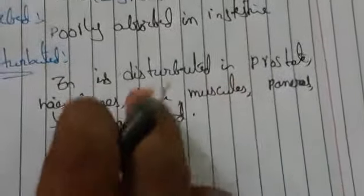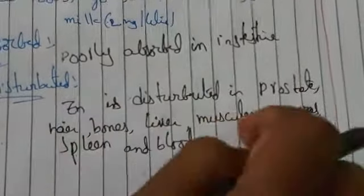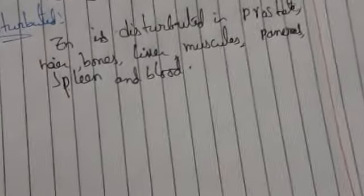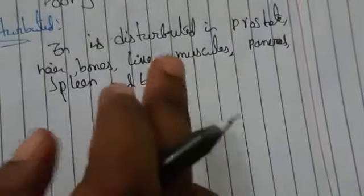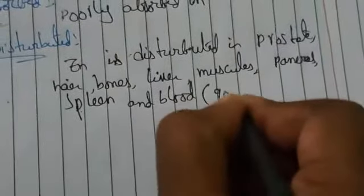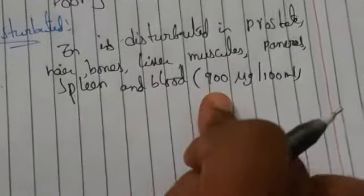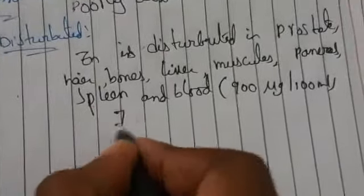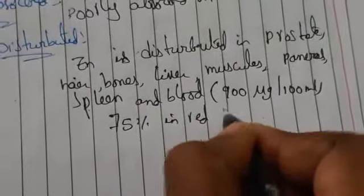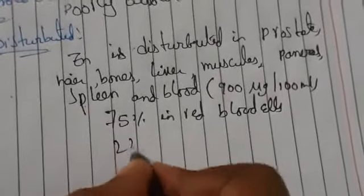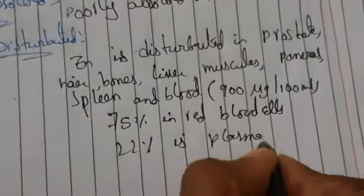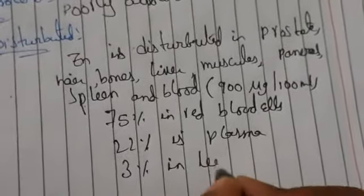The average concentration of zinc in blood is nearly 900 micrograms per 100 ml, so only a very minute amount is present in blood. About 75% is present in red blood cells (erythrocytes), 22% in plasma, and 3% in white blood cells (leukocytes).